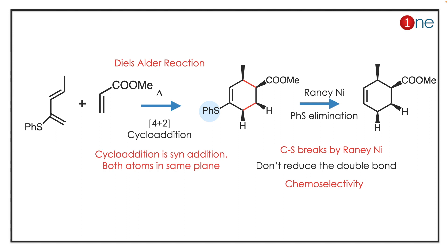Then you apply Raney Nickel, which is selective for thio groups — it removes the carbon-sulfur bonds. So you get removal of the PhS group. The key concept to learn here is that cycloaddition is a syn addition reaction.